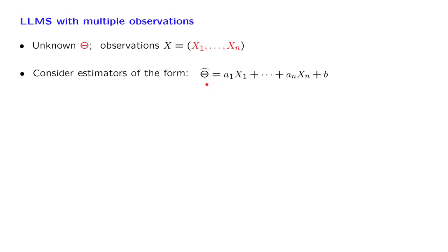Once more, we restrict ourselves to estimators that are linear functions of the data, linear functions of the observations that we have. And then we pose the problem of finding the best choices of these coefficients a1 up to an and b. What does it mean to find the best choices?